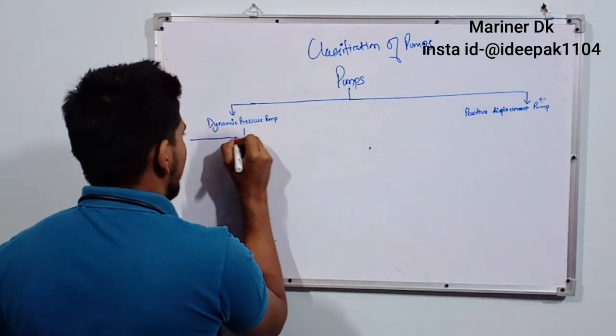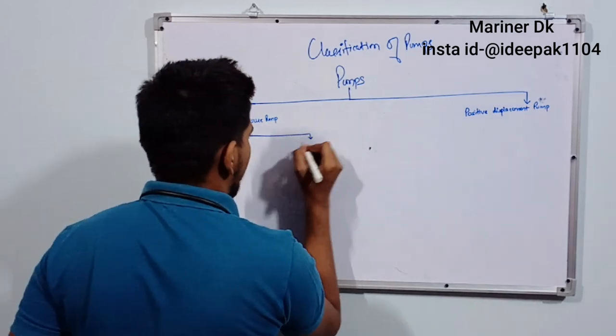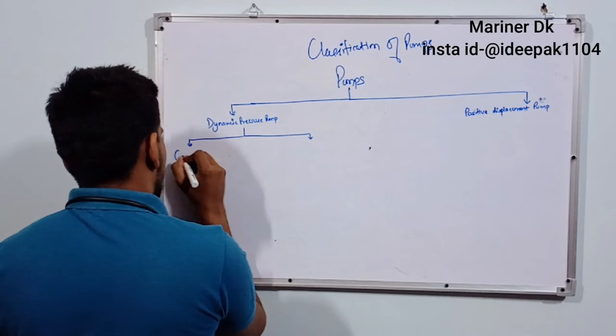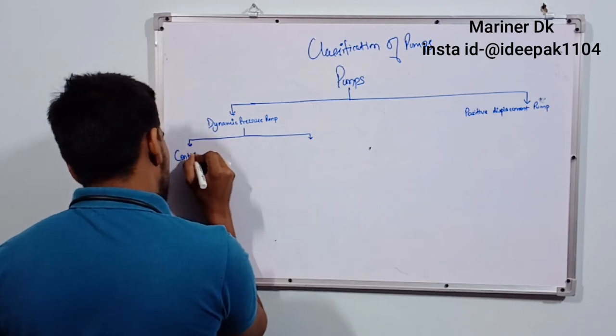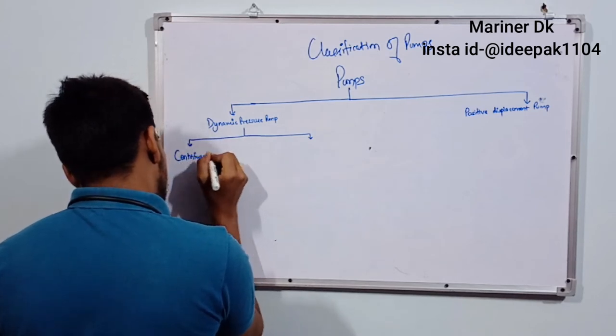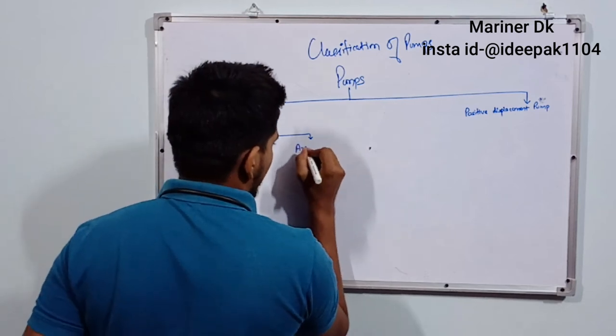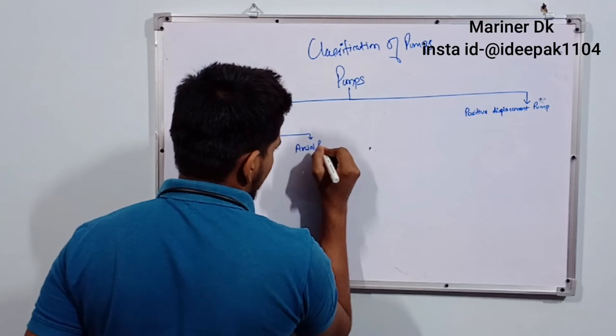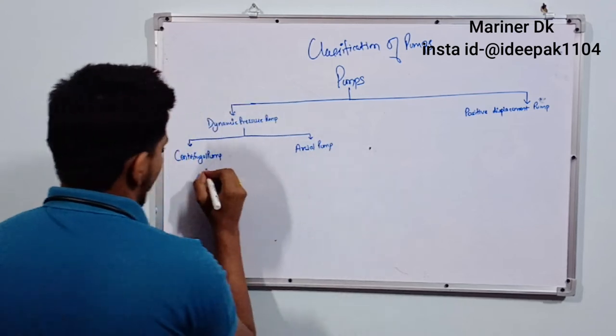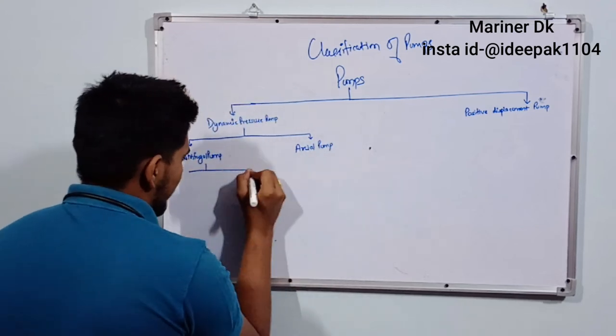Dynamic pressure pumps are divided into different types. First is centrifugal pump. So we will classify the centrifugal pump further.